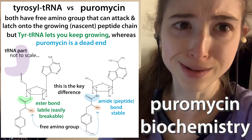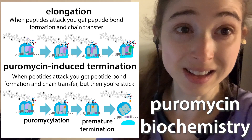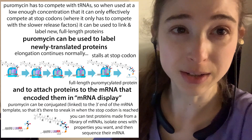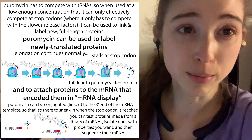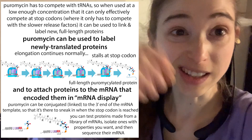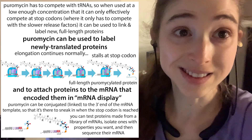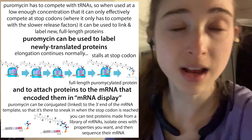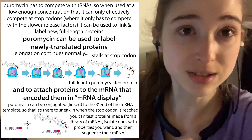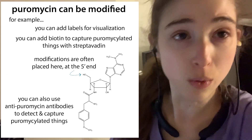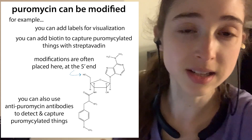Puromycin biochemistry is purely awesome. It can be used to do things like label growing proteins, things for mRNA display, so you can select for proteins and actually link them to the mRNA with the instructions that made them, to find and test big libraries — all this really cool stuff. Today's post is just a whirlwind overview of puromycin and some cool things that you can do with it.